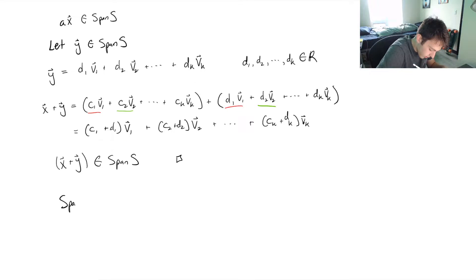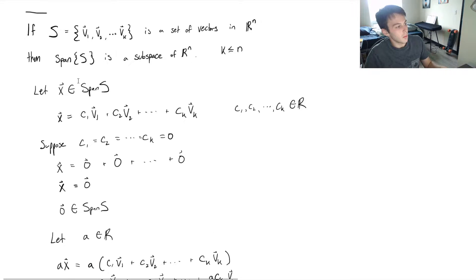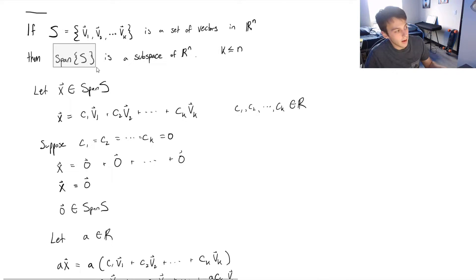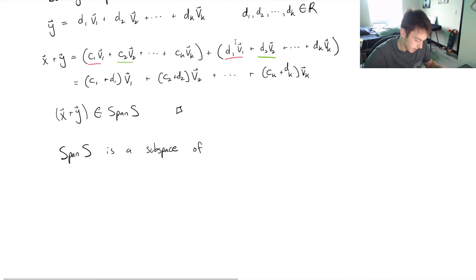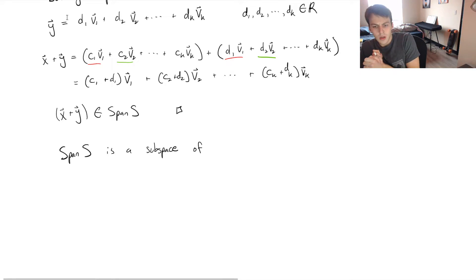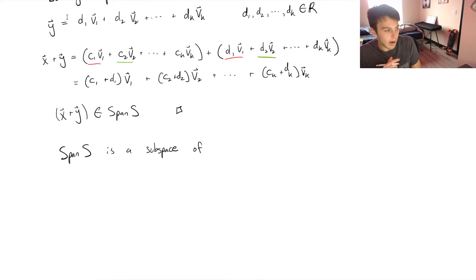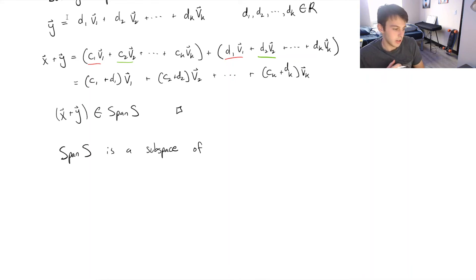All three conditions of the subspace test are satisfied, so we've proven that the span of S is a subspace of Rⁿ. This makes sense because v₁ through vₖ are vectors in Rⁿ, and we're showing the span of that set of vectors is a subspace of the respective vector space. As a related note, every single subspace in Rⁿ is going to be the span of some finite set of vectors. I hope this video helped — see you in the next one!